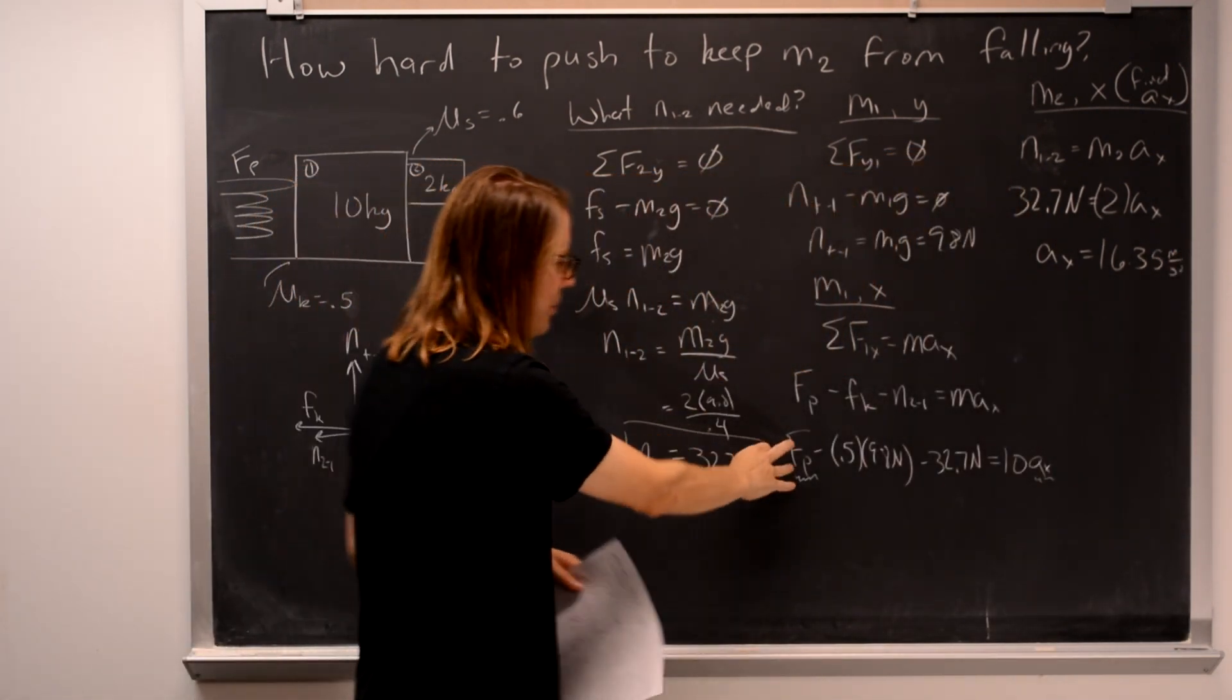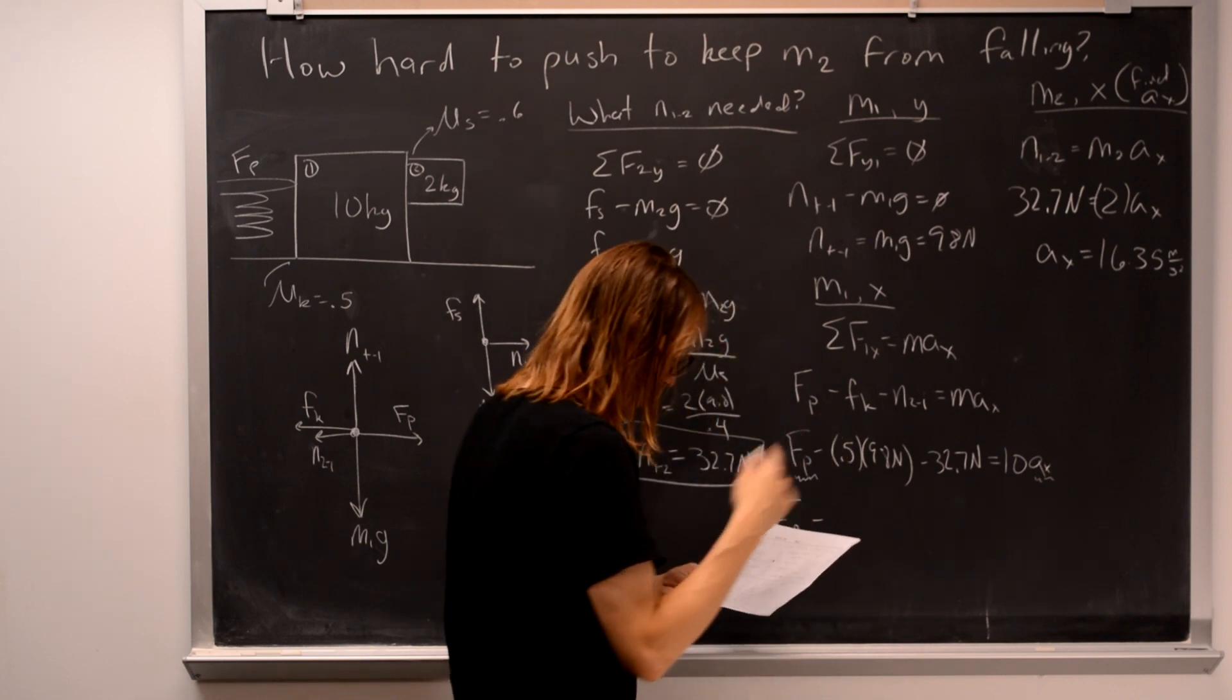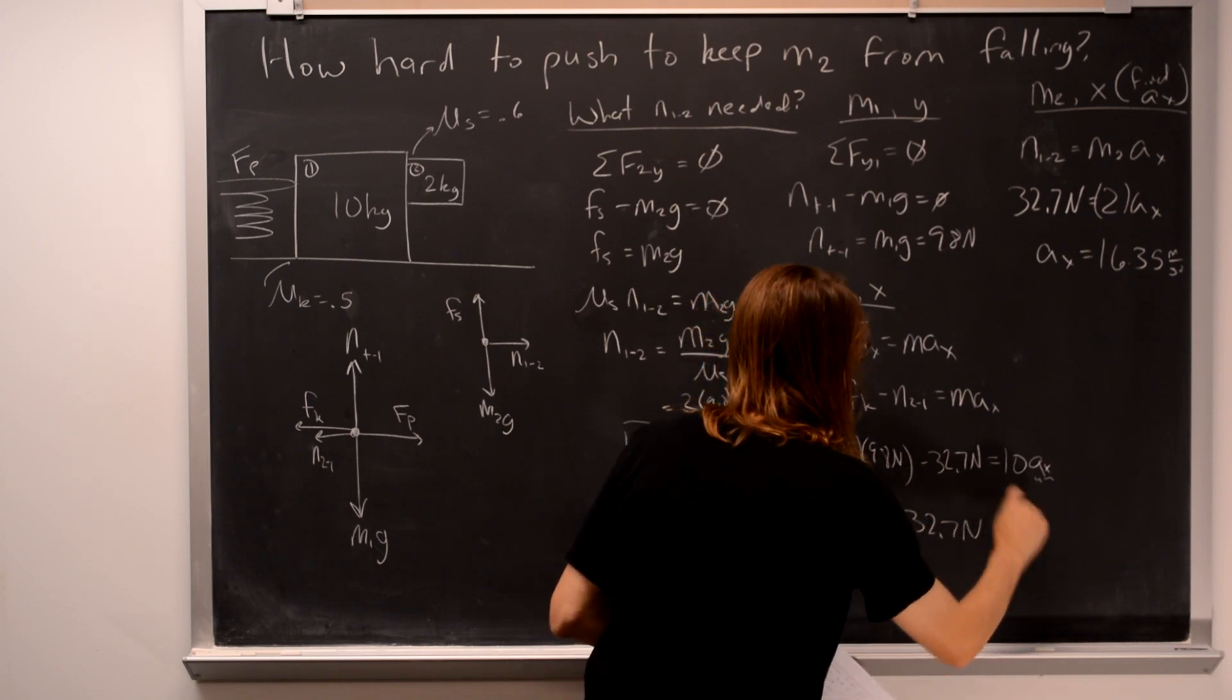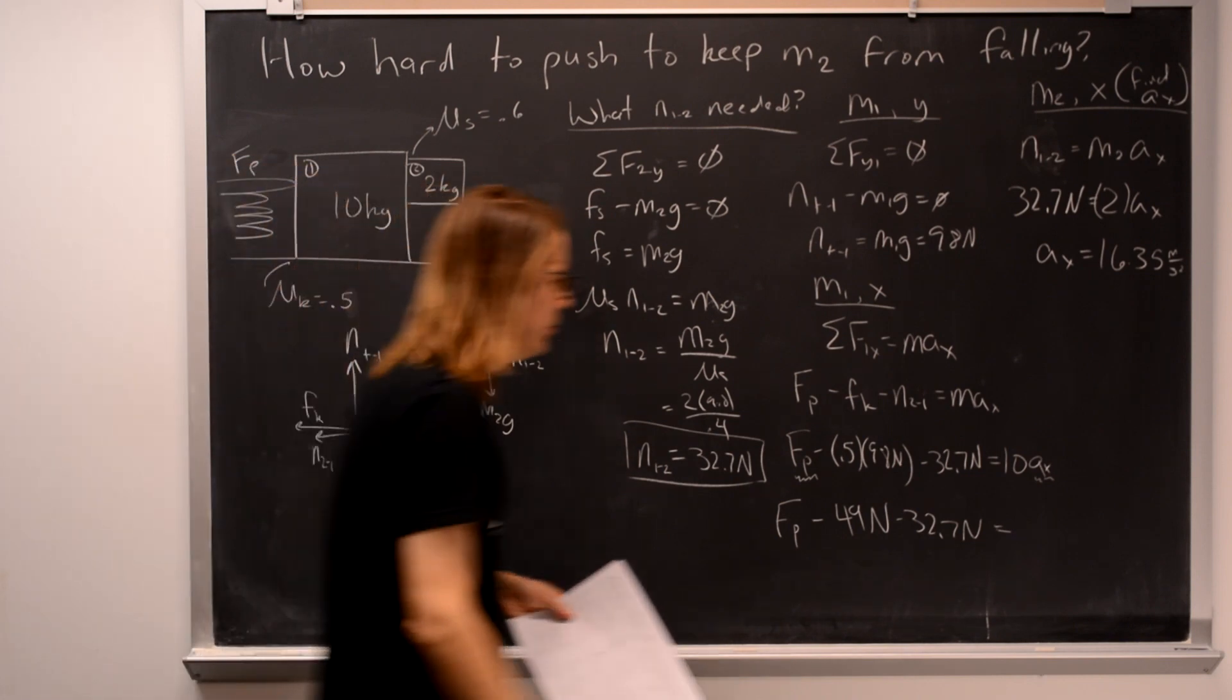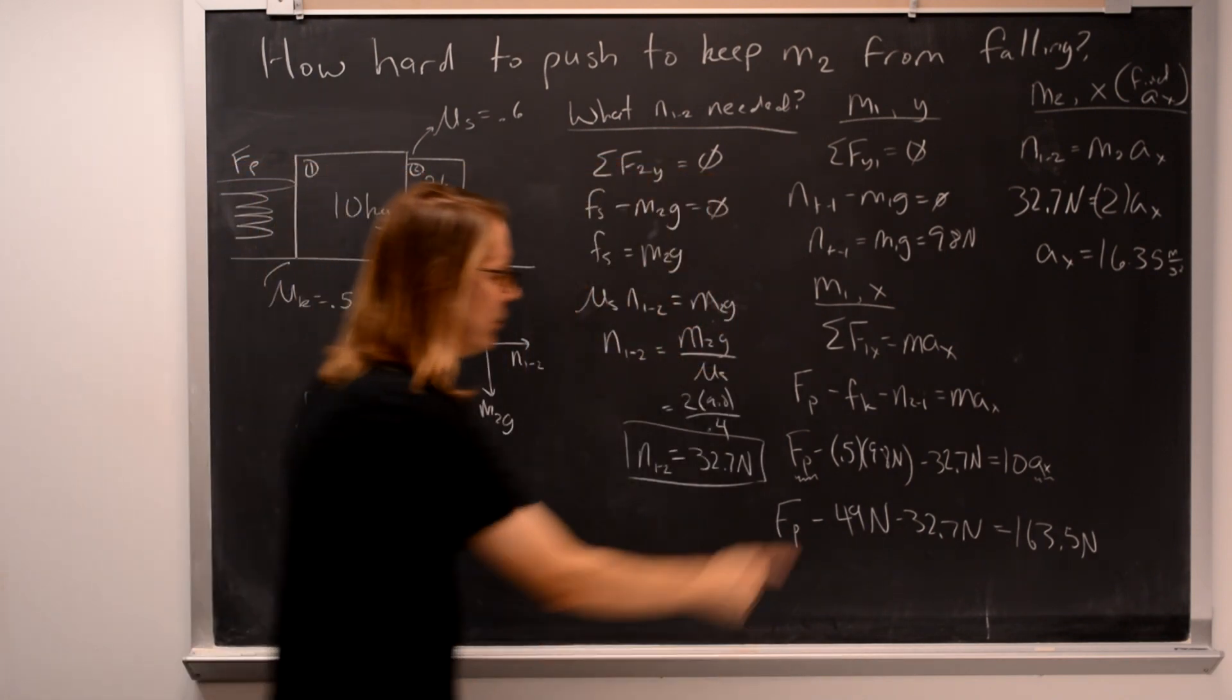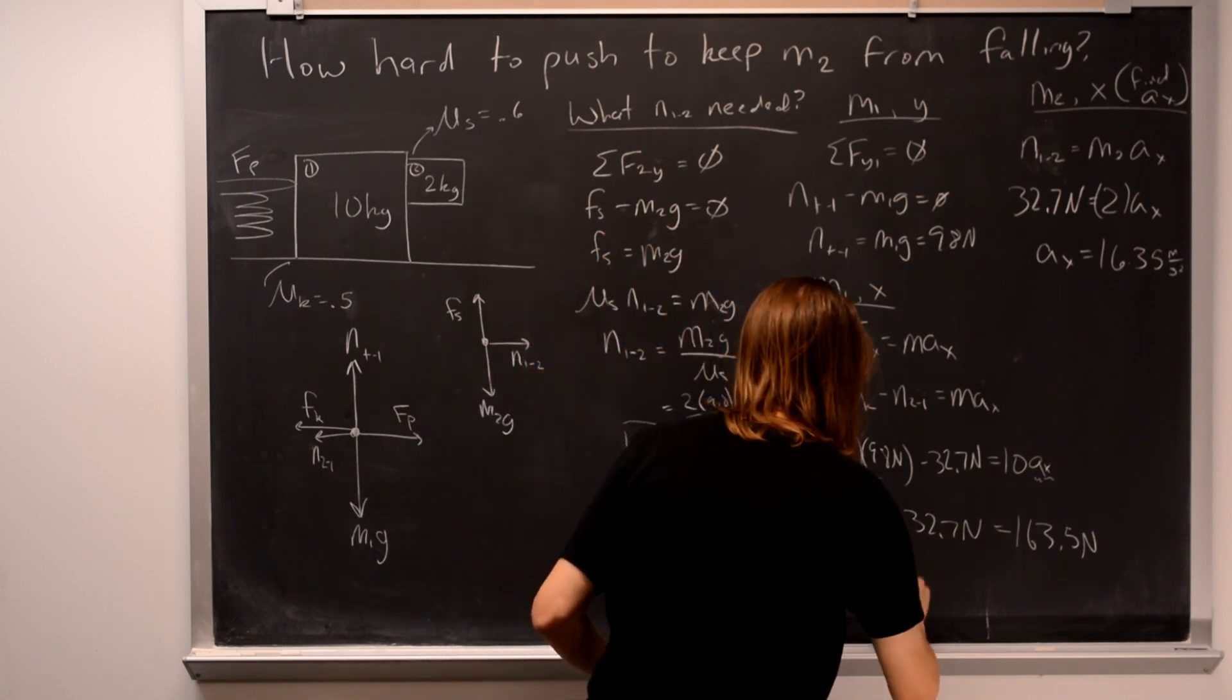So we have the push force we're looking for minus 49 newtons minus 32.7 newtons equals 10 times 16.35. So then we just add those three numbers. These two go over here and become positive. And we get the force you need. It's very large. It's 245.2 newtons.